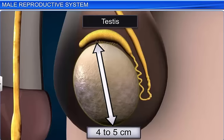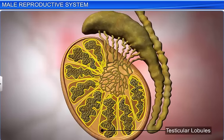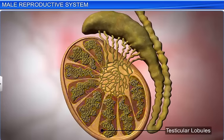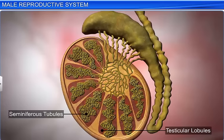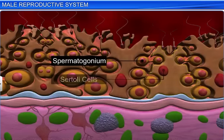The testes are surrounded by a tough connective tissue capsule called the tunica albuginea. Each testis has 250 compartments called testicular lobules. Each lobule in turn contains 1 to 3 highly coiled seminiferous tubules. The lining of each seminiferous tubule is called the germinal epithelium, and contains the male germ cells known as the spermatogonia, and Sertoli cells.